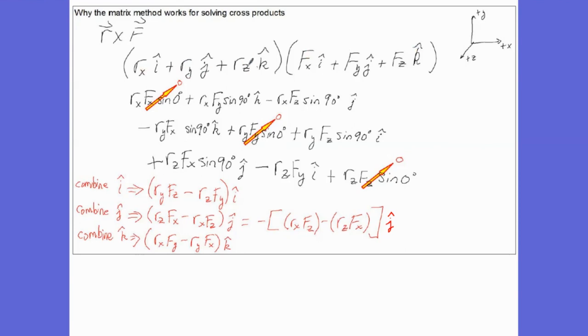And we're going to use the distributive property to take the cross product of the X components, then the X and the Y, then the X and the Z, and continue with all combinations. When we take the cross product of Rx and Fx, its magnitude is Rx Fx sine of the angle between them, which is sine of zero. So that term goes away.